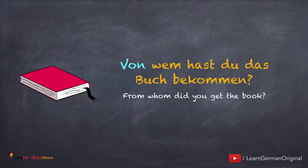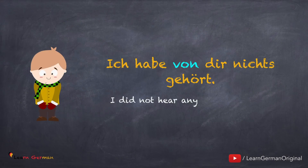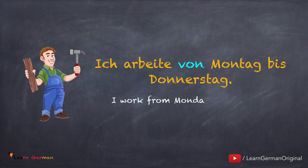With the preposition VON, you will not only use the dative articles, but also dative personal pronouns. For example: 'Ich habe von dir nichts gehört.' And here's the temporal usage of the preposition: 'Ich arbeite von Montag bis Donnerstag.'